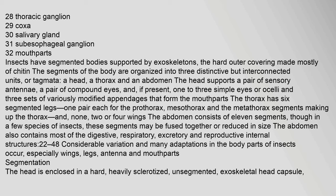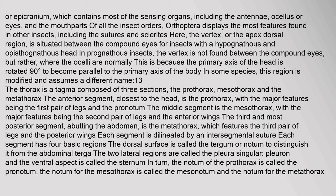The head is enclosed in a hard, heavily sclerotized, unsegmented exoskeletal head capsule or epicranium, which contains most of the sensing organs including the antennae, ocellus or eyes, and the mouthparts. The order Orthoptera displays the most features found in other insects, including the sutures and sclerites. The vertex, or the apex dorsal region, is situated between the compound eyes. In prognathous insects, the vertex is not found between the compound eyes, but where the ocelli are normally, because the primary axis of the head is rotated 90 degrees to become parallel to the primary axis of the body.